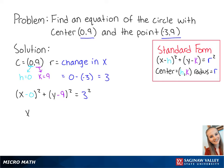This can be simplified as x squared plus y minus 9 squared equals 9. And this is the final answer.